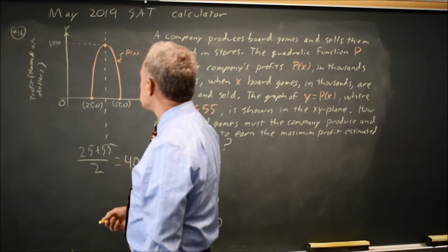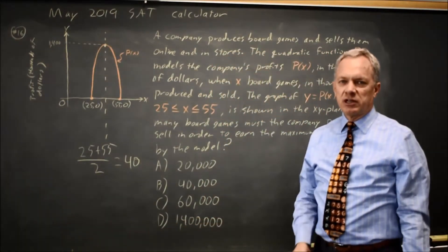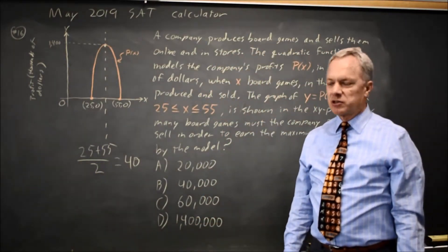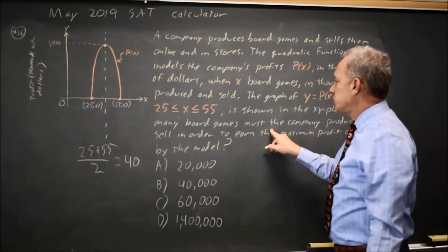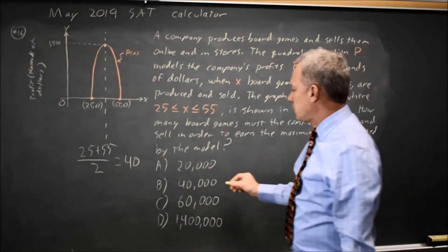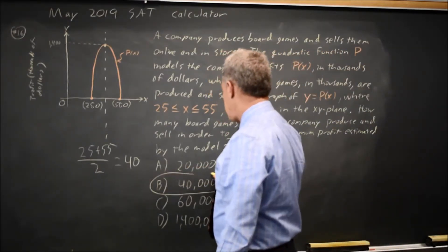And x equals 40, where x is the number of games produced and sold in thousands. So how many board games must the company produce and sell in order to earn the maximum profit would be 40,000.